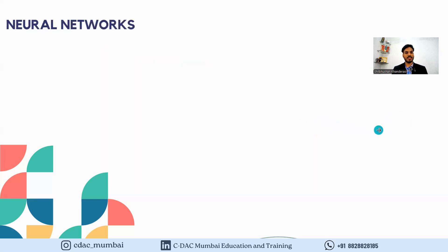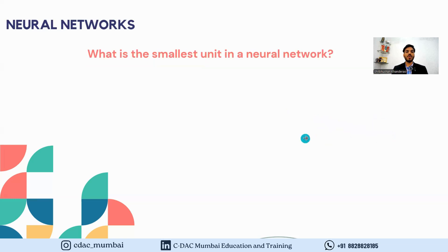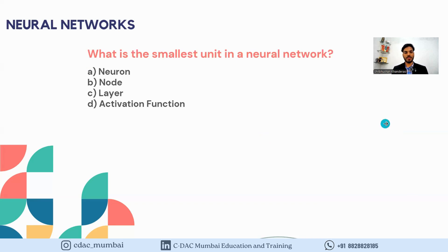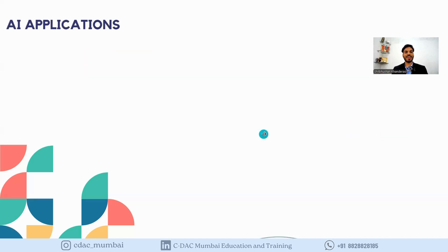We have a question on neural networks: what is the smallest unit in a neural network? Options are: A) Neuron, B) Node, C) Layer, D) Activation function. The answer is A — a neuron is the smallest unit of a neural network.